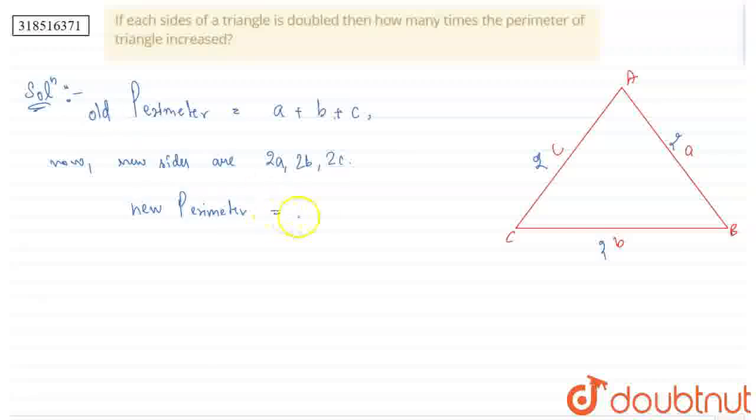2a plus 2b plus 2c, which equals 2 times (a plus b plus c). That's 2 multiplied by the old perimeter. So we can say 2 times.